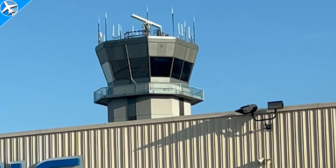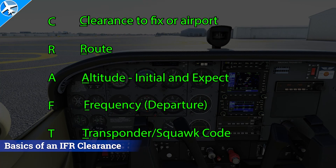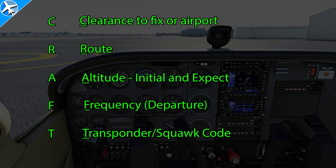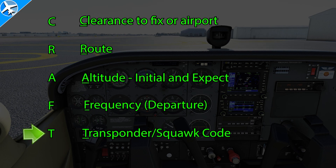Let's start with some basics of copying a clearance. When an IFR clearance is read by ATC, it's going to follow a standard format. An acronym to help recognize that format is CRAFT. The C is a clearance to a fix or an airport. The R is the route or routing you're going to take to get there. The A is altitude — you're going to get an initial altitude and an expect altitude. F is frequency or departure frequency. And the T is transponder or squawk code.